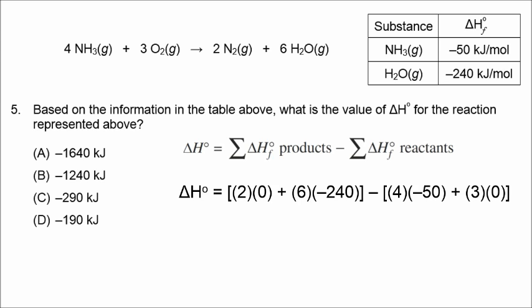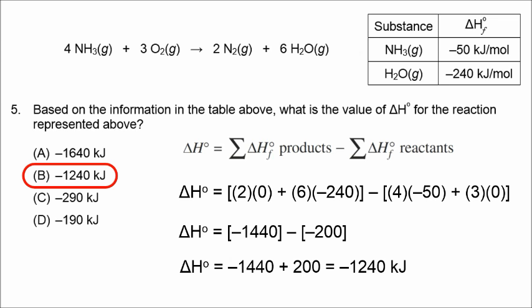Doing products minus reactants: we have 2 times 0 plus 6 times the value for water, minus 4 times the value for ammonia (NH3), plus 3 times 0. This math equals negative 1,440 minus negative 200, so the correct answer is B, negative 1,240.